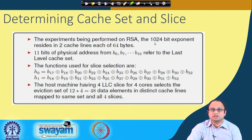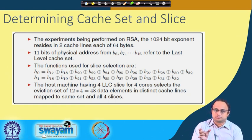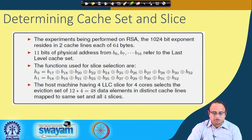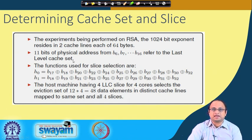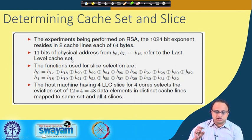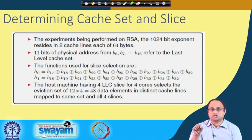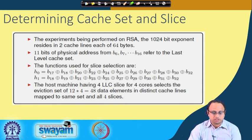The exponent is 1024 bits total, occupying 2 cache lines of 64 bytes each — that is 64 × 8 × 2. Then 11 bits of the physical addresses refer to the last level cache set. We are considering 4 cores, meaning we have a mapping to 4 cores with 4 corresponding slices in the cache memory. The corresponding hash functions, which have been reverse engineered in prior work, are shown by these 2 equations.